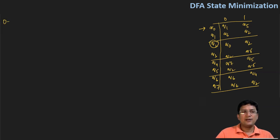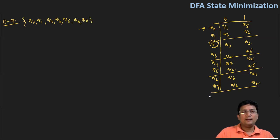We'll first find out the zero equivalence. The zero equivalence contains the non-final states: q0, q1, q3, q4, q5, q6, and q7. And the final state set contains q2.